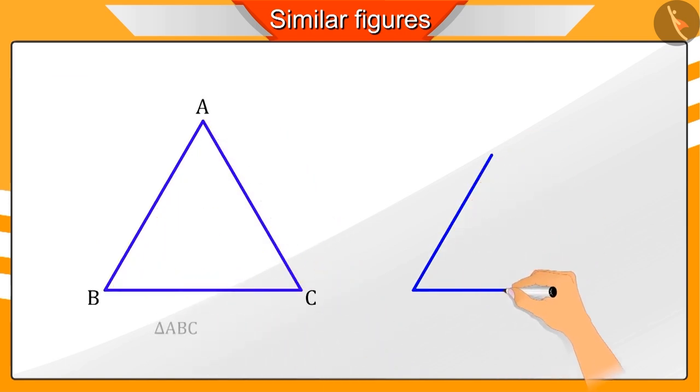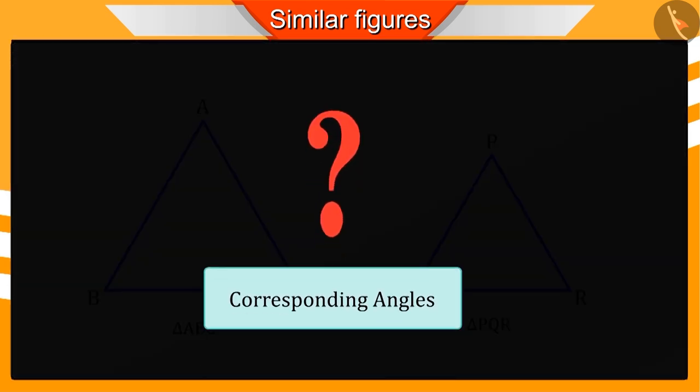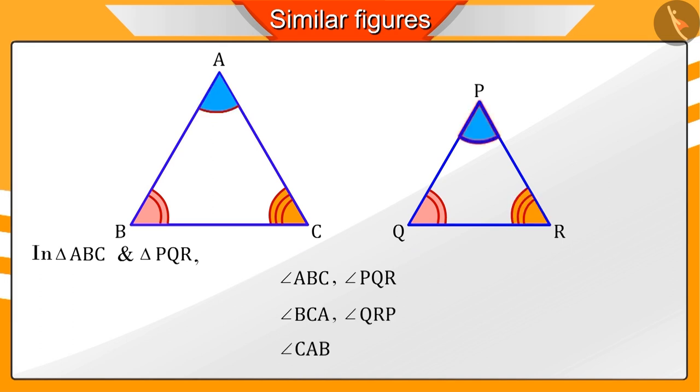Here, we have two triangles ABC and PQR. Can you name the corresponding angles of these triangles? Absolutely correct. Here, angles ABC and PQR, angles BCA and QRP, and angles CAB and RPQ are the corresponding angles.